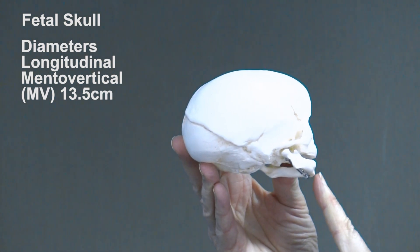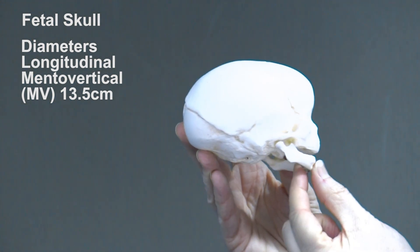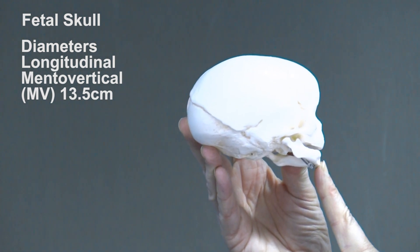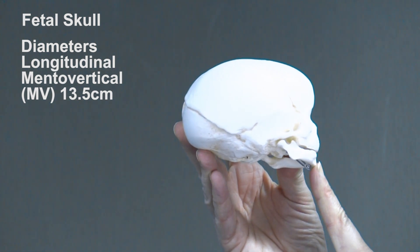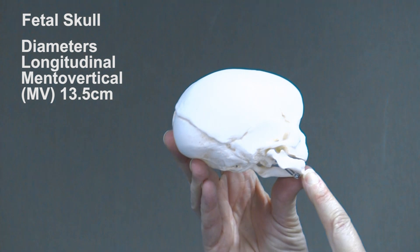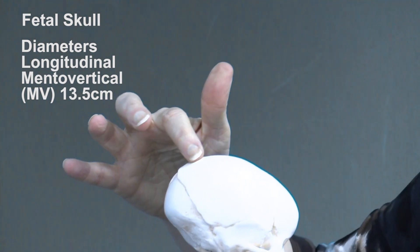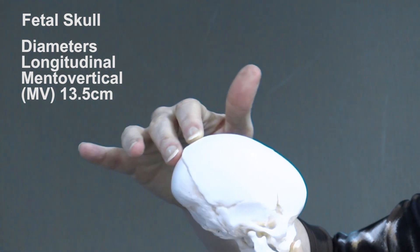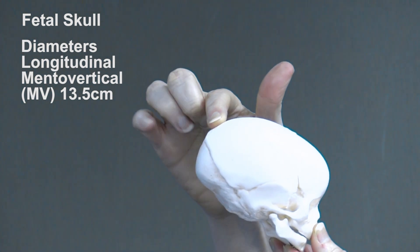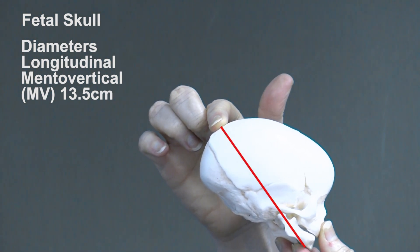The next diameter is the mentovertical diameter, which is 13.5 centimeters. This is measured from the point of the chin — the mentum — to the highest point on the vertex.